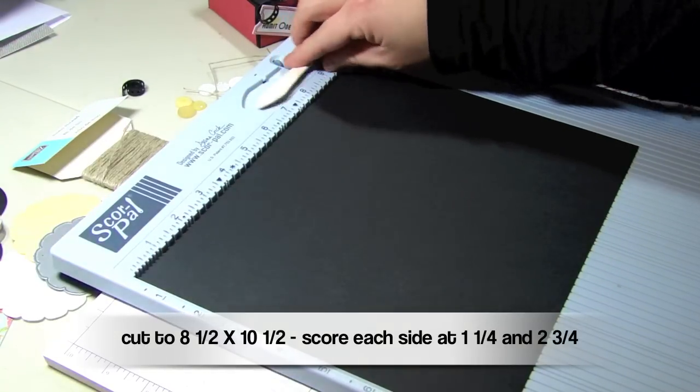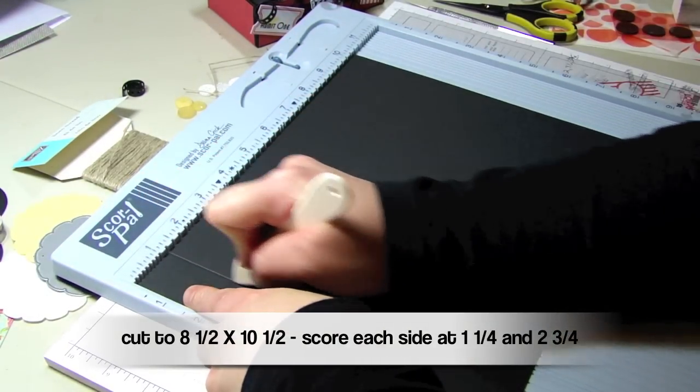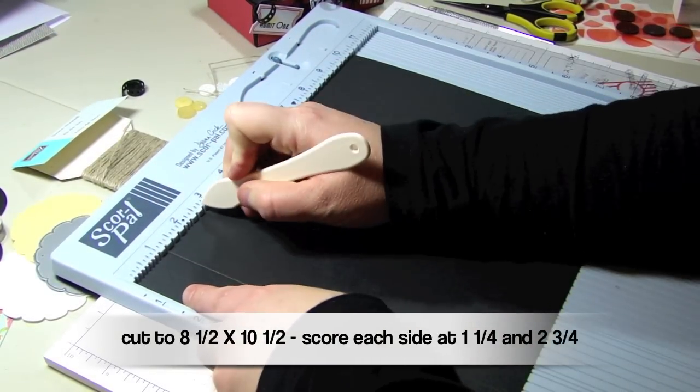You'll be starting with a piece of cardstock cut to 8.5 by 10.5. Then you're going to score each side at 1.25 by 2.75.